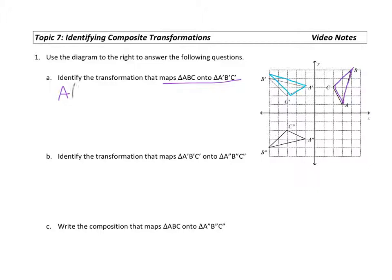I'm going to start with point A at (3, 1), and that maps onto A prime at (-1, 3).